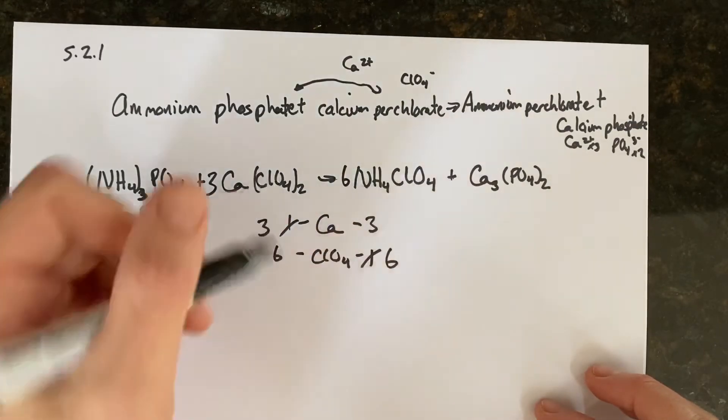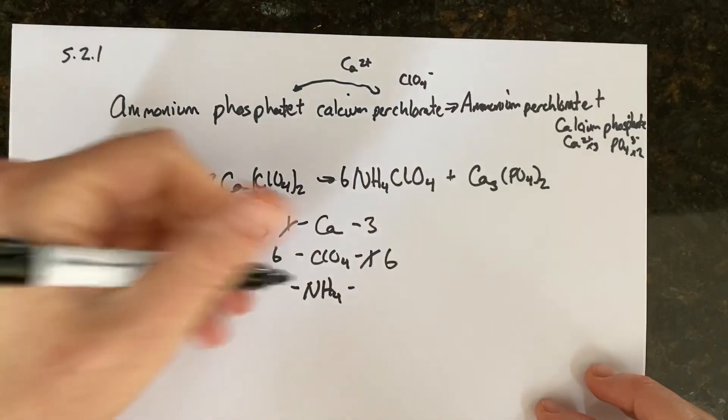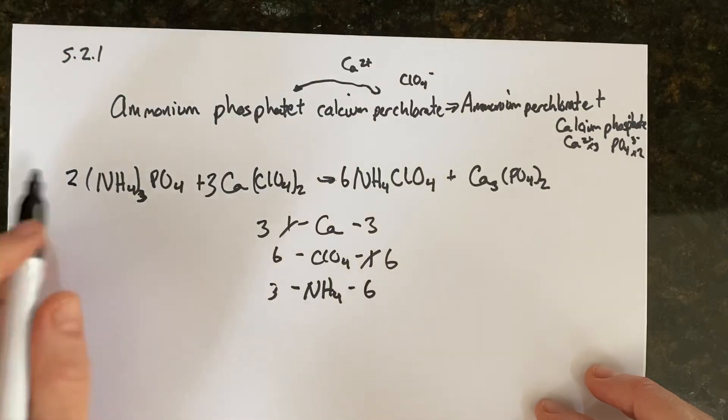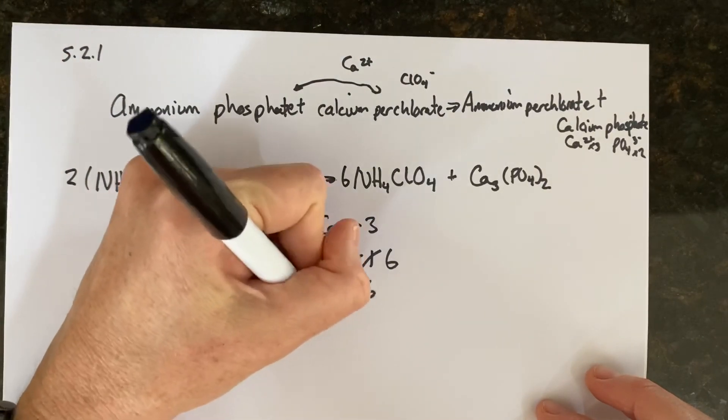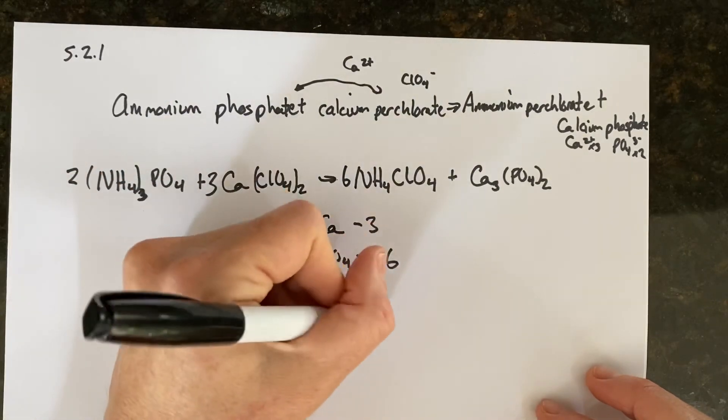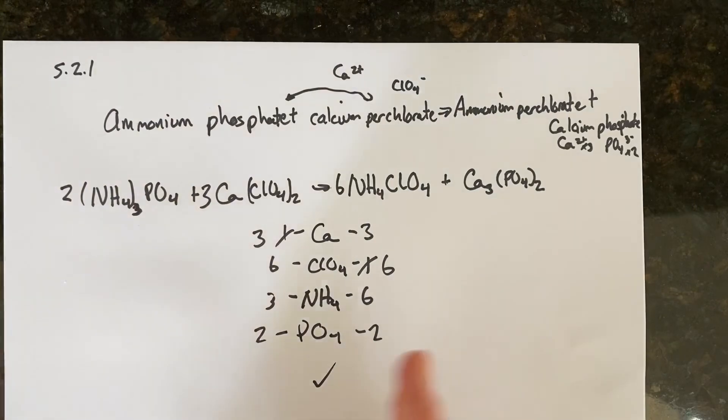Now I've changed the number of ammoniums. On my left-hand side, I got three. On my right-hand side, I have six. Three divided by six is two. So I've put a two there. That's changed the number of phosphates. On my left-hand side, I have two. On my right-hand side, I have two. And I am balanced. So kind of go through and look, especially when you have twos and threes, look for something that might eventually turn to six. And I hope this helps.